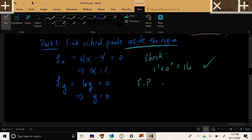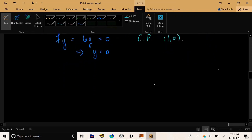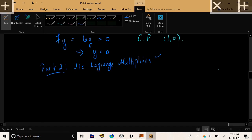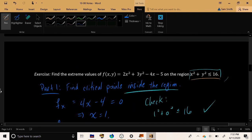So let's just make a note. We found a critical point of 1 comma 0. So then our goal is to use Lagrange multipliers for the boundary of the region. Use Lagrange multipliers for the boundary of the region corresponding to the circle x squared plus y squared equals 16. The circle on the edge of this disk-shaped region.